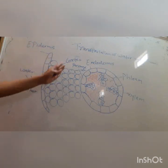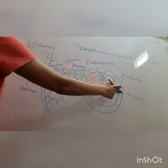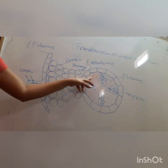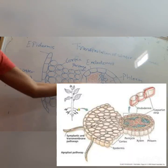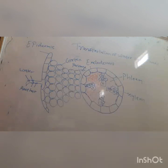Below cortex there is a barrel-shaped cell layer which is known as endodermis. Endodermis consists of phloem and xylem. Till here we have already completed the recap, and now we have to see how water moves inside the plant through the root.